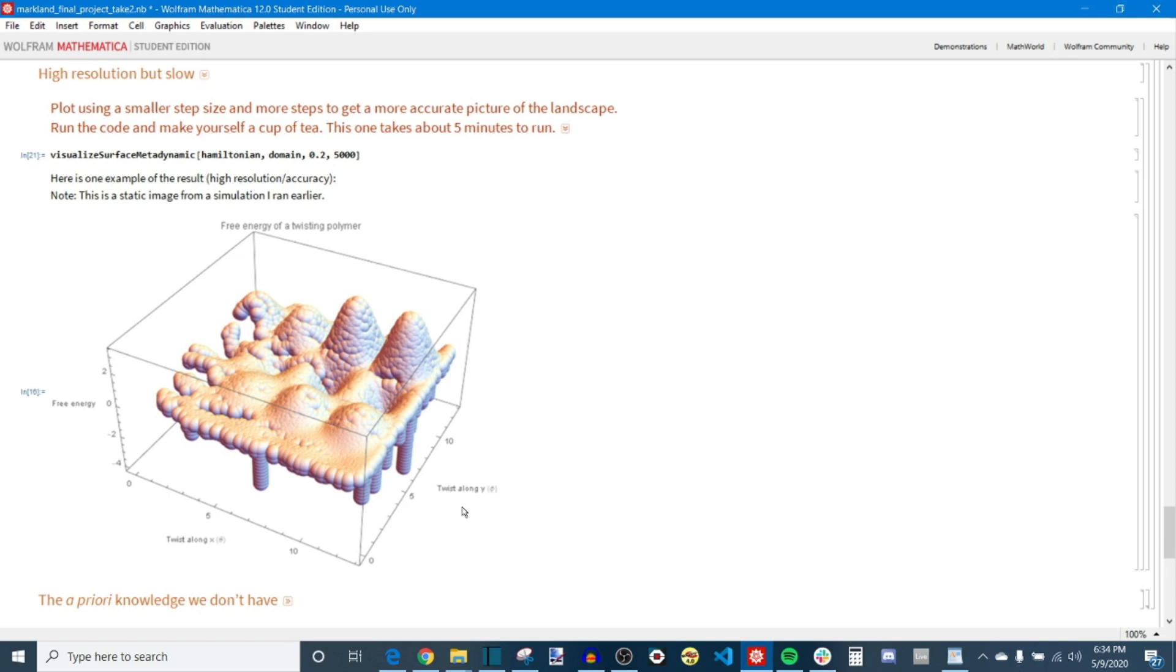These are called CVs or collective variables. A researcher or an engineer can use this to estimate at a glance whether a certain configuration of their system is stable or unstable. A low point in the landscape, a depression, corresponds to something that's stable, and something that's at high elevation in the landscape is something that is thermodynamically unstable.